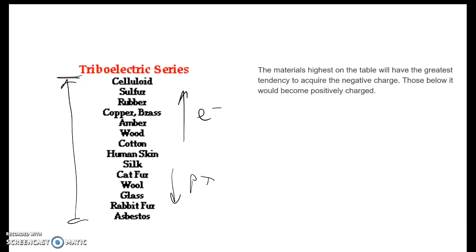For example, let's say I take silk and I rub it on some copper. What's going to happen is the silk is going to give its electrons to the copper. The copper will develop a negative charge and the silk will be the positive charge.